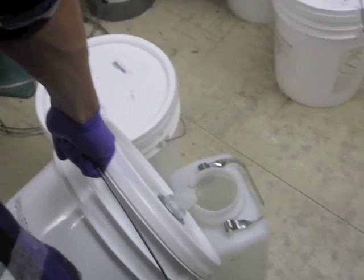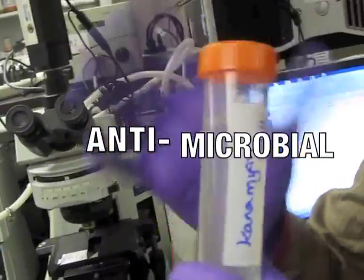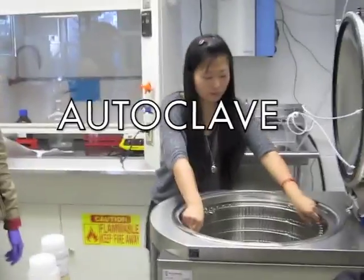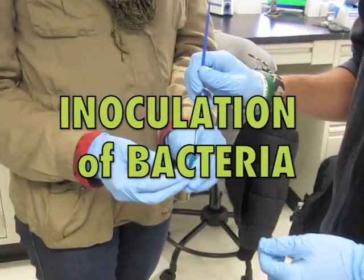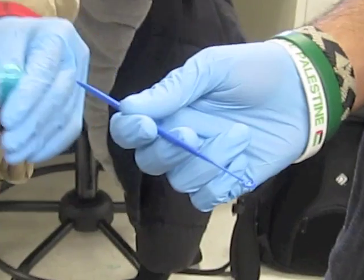We started the experiment by preparing agar, LB broth, and antimicrobial kanamycin solution. We autoclaved everything, allowed the solutions to cool, and poured the agar into plates before inoculating them with bacteria and placing them in a heated chamber to grow.